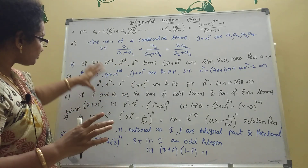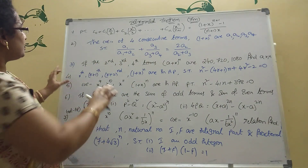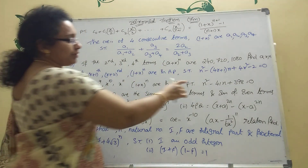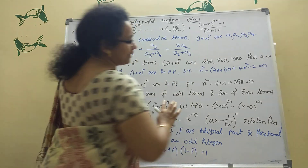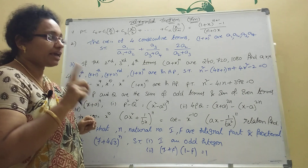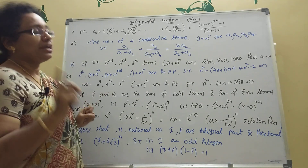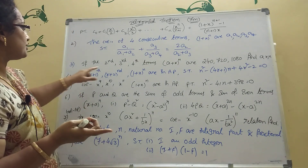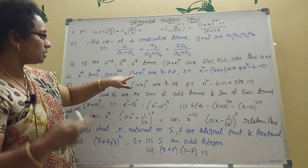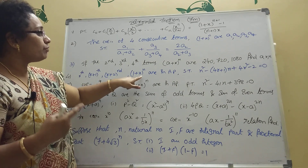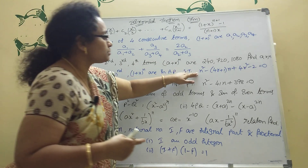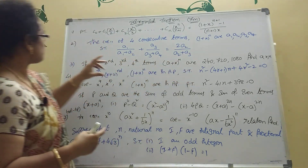Next model: if the second, third, and fourth terms of (a+x)ⁿ are 240, 720, and 1080 respectively, then find a, x, and n — three unknowns you must find. Next: if the rth, (r+1)th, and (r+2)th coefficients in the expansion of (1+x)ⁿ are in AP, show the given result. I have already uploaded this problem as well.